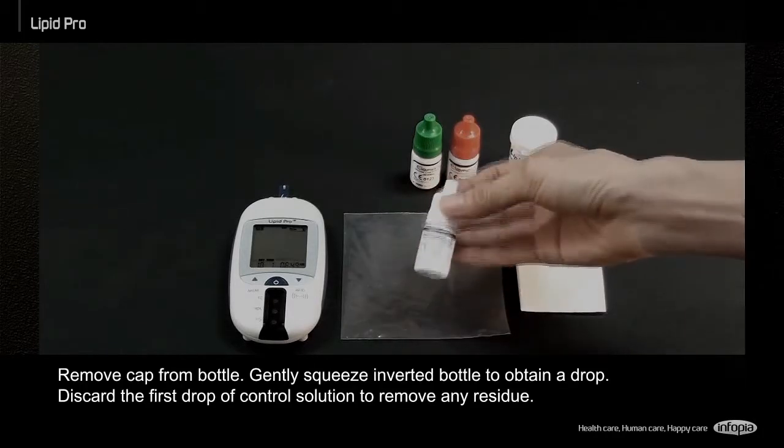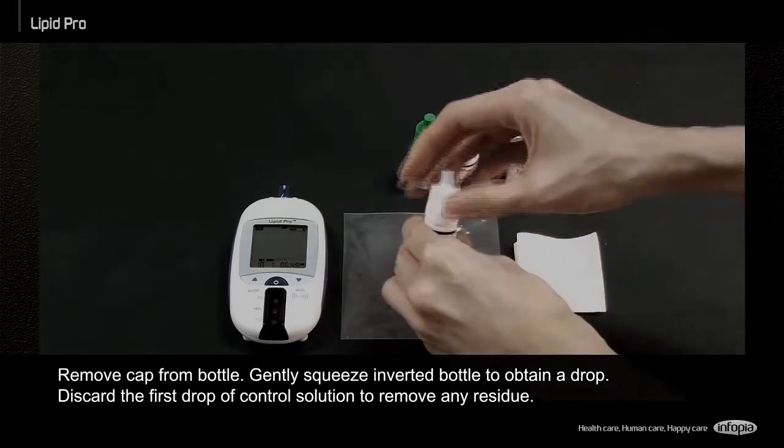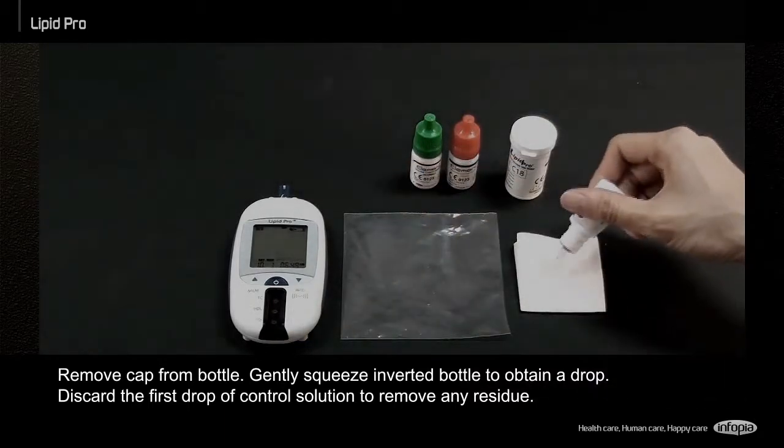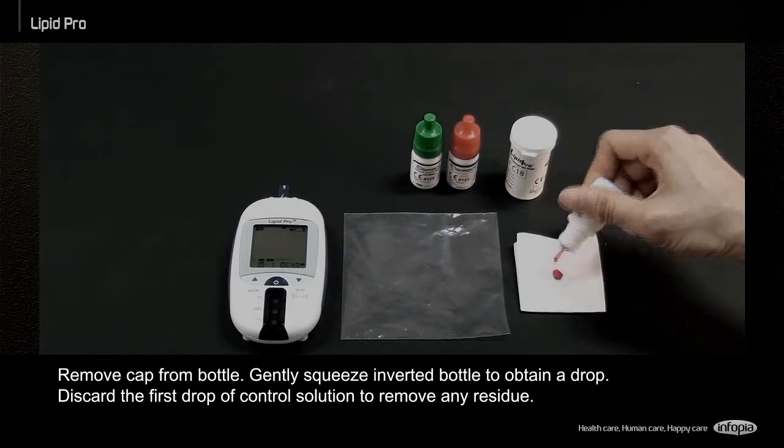Remove cap from bottle. Gently squeeze the inverted bottle to obtain a drop. Discard the first drop of control solution to remove any residue.